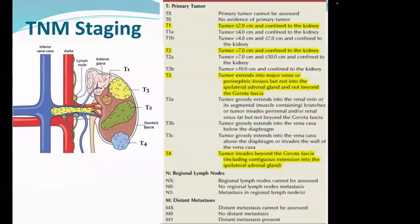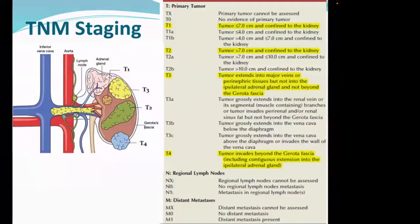For lymph node staging: if there is involvement of a surrounding lymph node around the kidney, we say N1. If no lymph node involvement, then N0. M staging is also straightforward: no metastasis to other organ is M0, metastasis to any other organ - lung, liver, bone, brain - is M1. Only T staging was difficult; N and M are very easy.